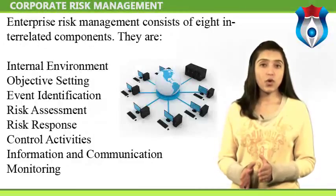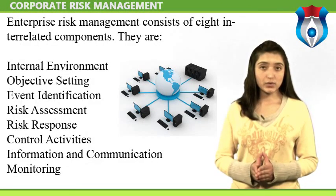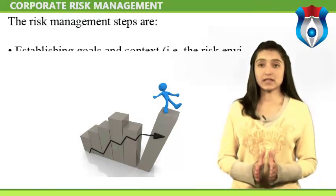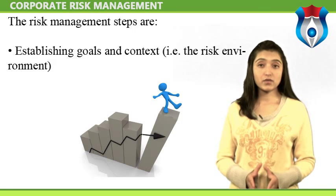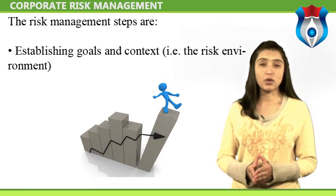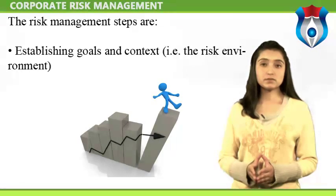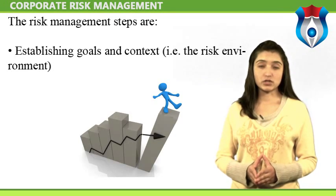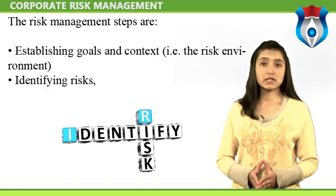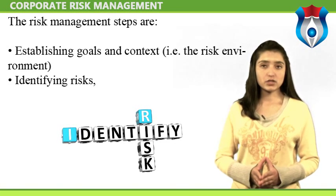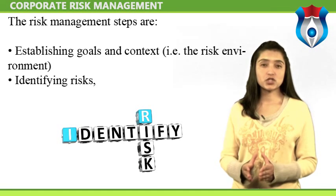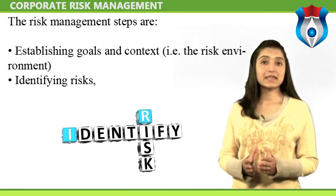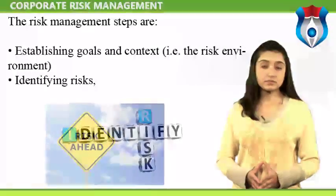The risk management steps begin with establishing goals and context — the risk environment. The purpose of this planning stage is to understand the environment in which the respective organization operates, meaning to thoroughly understand the external environment and the internal culture of the organization. The next step is identifying risks, using information gained from the context, categorized by source. This involves identifying the risks that are likely to affect the achievement of the goals of the organization — it should be noted that a risk can also be an opportunity or strength that has not been realized.